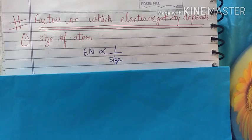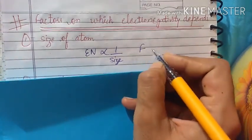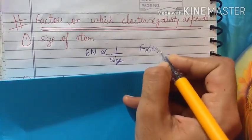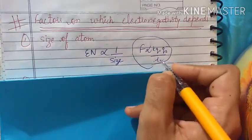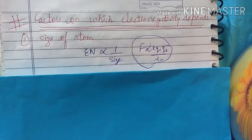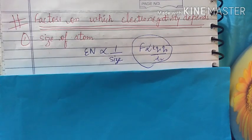Electronegativity is inversely proportional to the size of atom. The force of attraction formula is kq1q2 by r square. The smaller the distance r between nucleus and electron, the greater the force. Smaller atomic size means greater electronegativity.